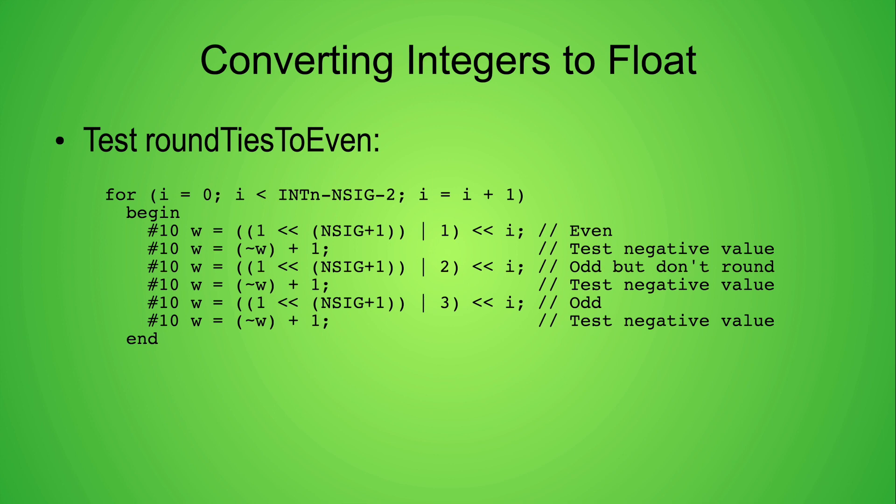The next set of tests is primarily for testing the round ties to even rounding mode, but of course we also get output for the other three rounding modes. Each iteration through the loop tests three pairs of numbers. The pairs of numbers are the positive and negative versions of the same integer value. Using the values of xBar and yBar as they were defined in the previous video, the first pair tests when xBar is even and yBar indicates that we have a tie, so we round down to f. The second pair of numbers has an odd value for xBar and yBar is 0, so again we round down to f. The third pair of numbers has an odd value for xBar and yBar indicates that we have a tie, so we round up to f plus 1.